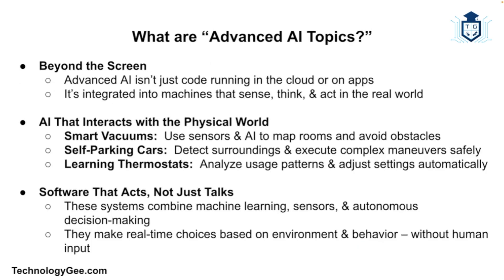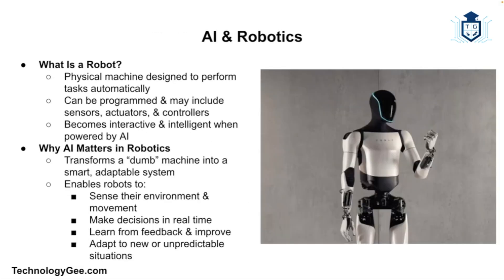Think of advanced AI topics as real-world applications that go beyond just software. Instead of just running in the cloud or on your smartphone, AI is now baked into machines that interact with the physical world. Think of your vacuum that can map your living room, a car that can park itself, or a smart thermostat that can learn your habits and adjust the temperature without you lifting a finger. This isn't just software that talks — this is software that actually acts.